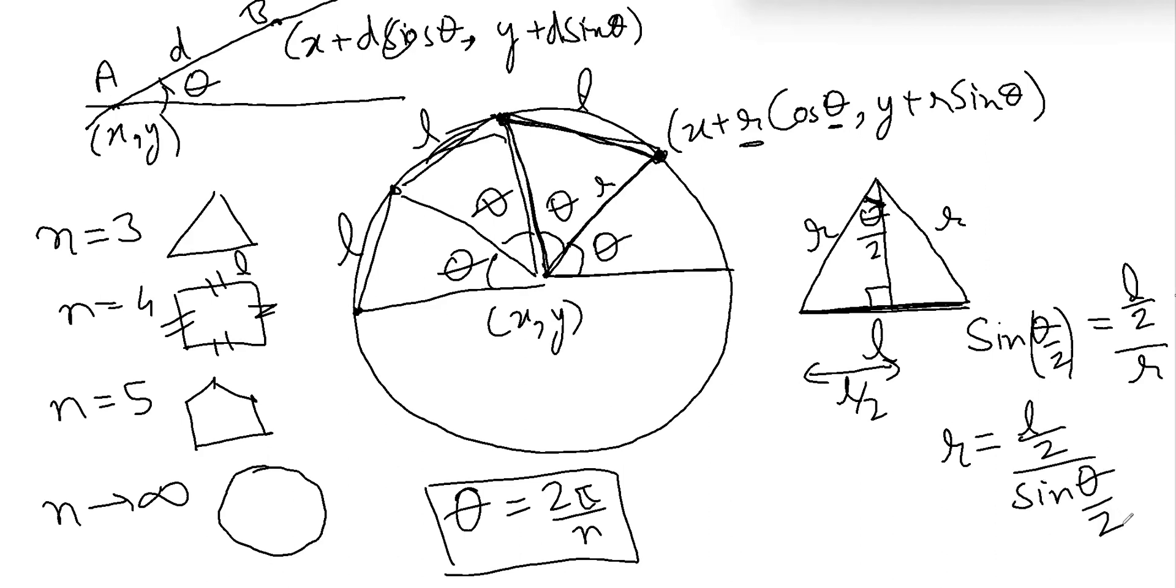So now we have got the values of theta and r. So using this formula, we can now get the values of our new coordinates, and we will be using this same formula in the code to create a polygon with size l and angle theta.